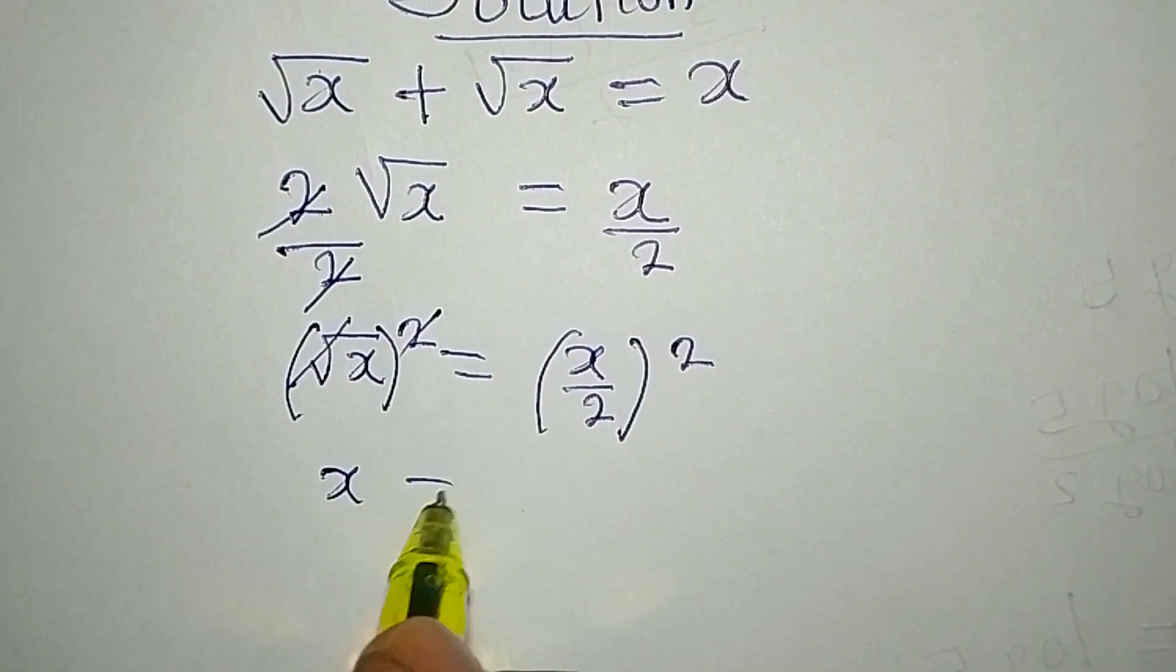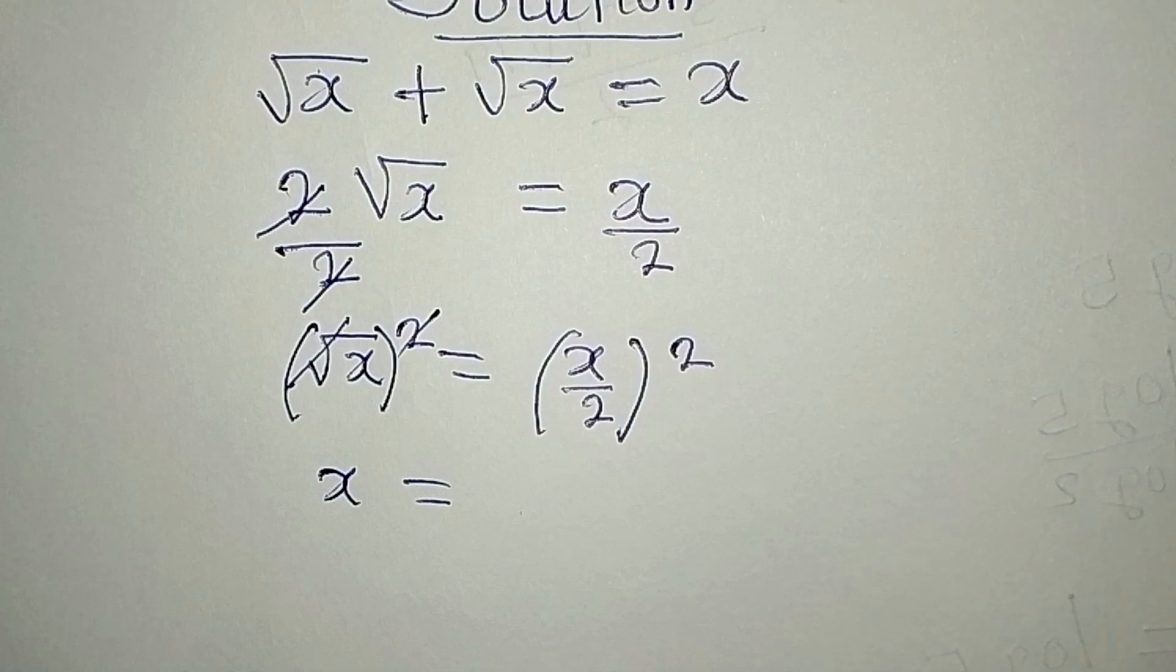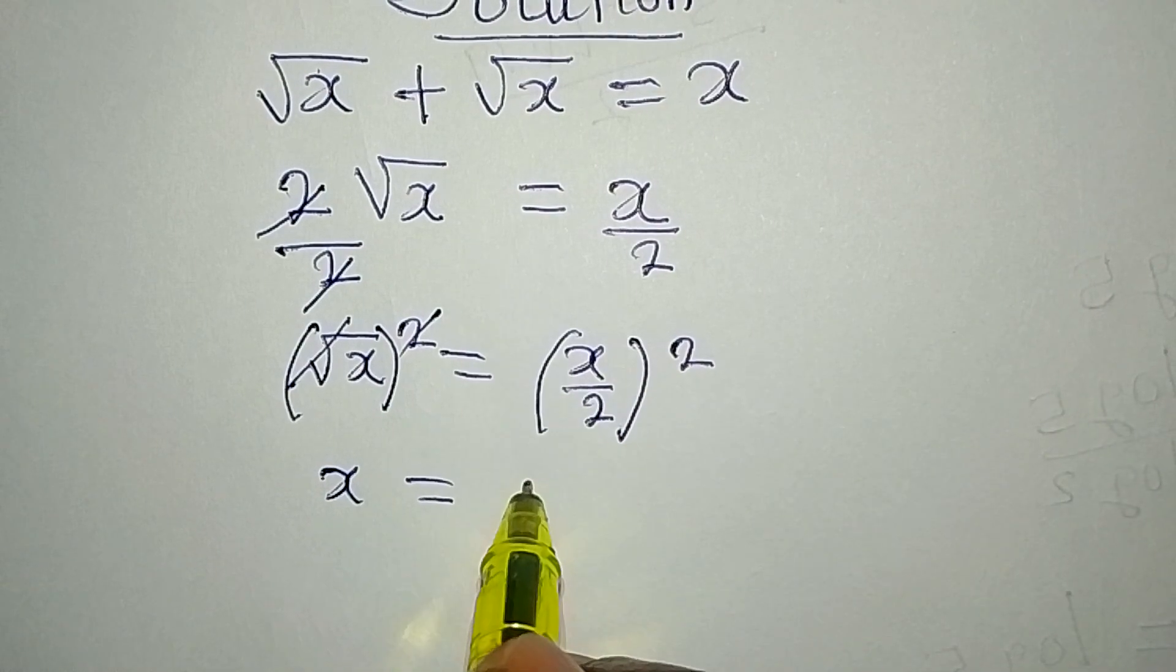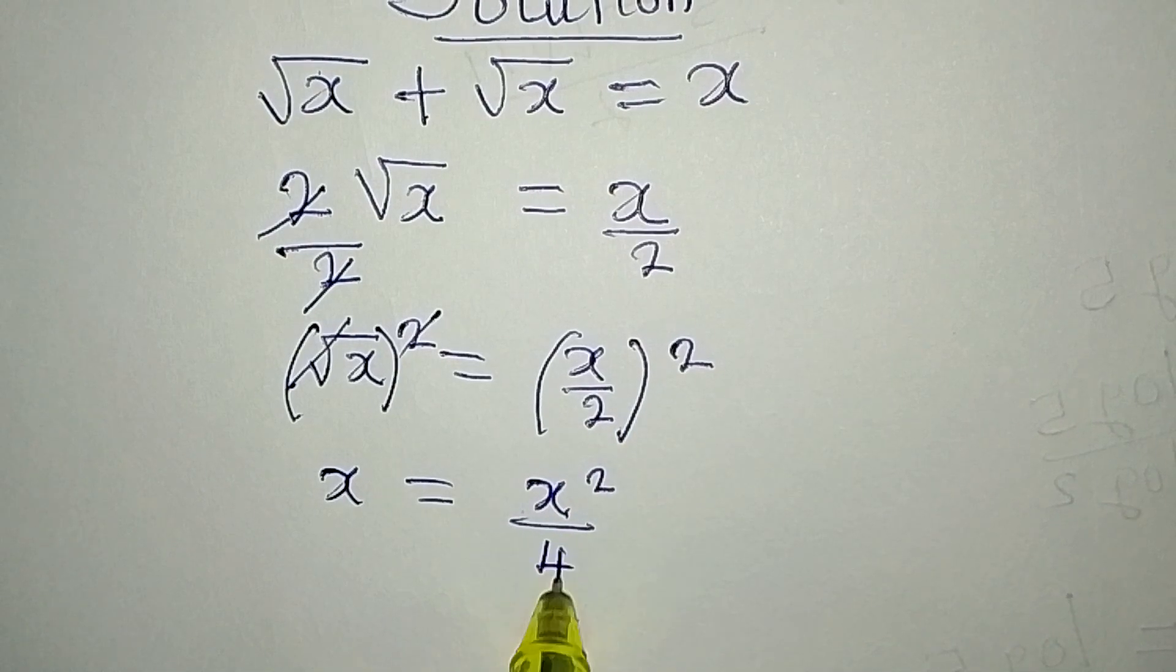Now x is equal to x over 2 to the power of 2. Now x squared will be here over 2 squared, and 2 squared will give 4.